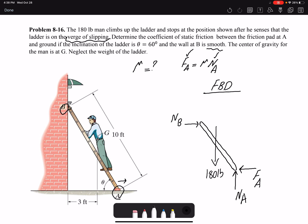I have the distance to point B which is 3 feet, and the total length of the ladder is 10 feet. So I have three unknowns: NA, FA, and NB.